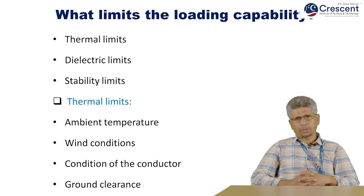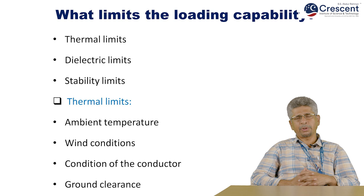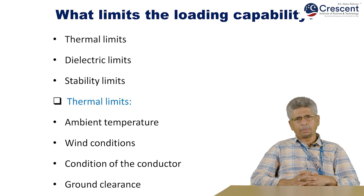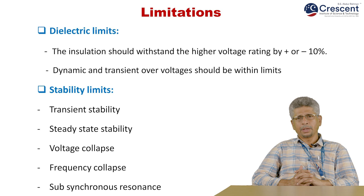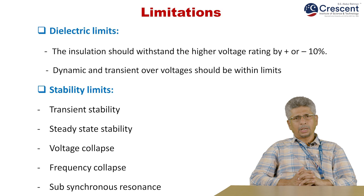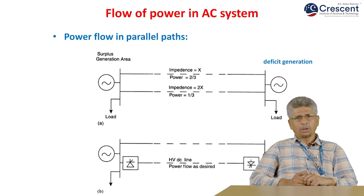What limits loading capability? Thermal limits: as the current value increases in the line beyond the rated value, there will be heating of the conductors, and there are allowable limits for the heating permitted. Dielectric limits: the space between the two conductors determines dielectric limits. Stability limits: how far the system is going to be stable when power is being transmitted. Temperature, wind conditions of the conductor, and ground clearance account for thermal limits. For dielectric limits, insulation should withstand higher voltage ratings by plus or minus 10%, and dynamic and transient overvoltages should be within limits. Stability limitations include transient stability, steady-state stability, voltage collapse, frequency collapse, and subsynchronous resonance.